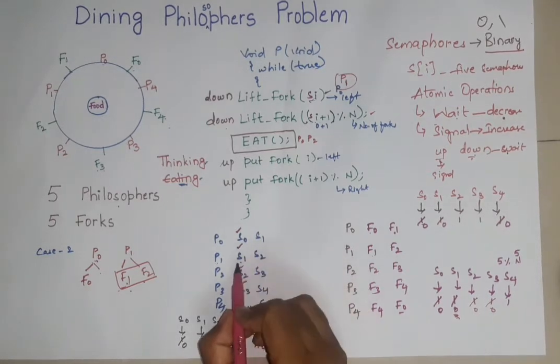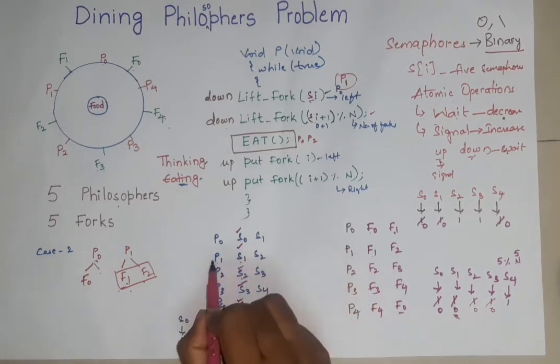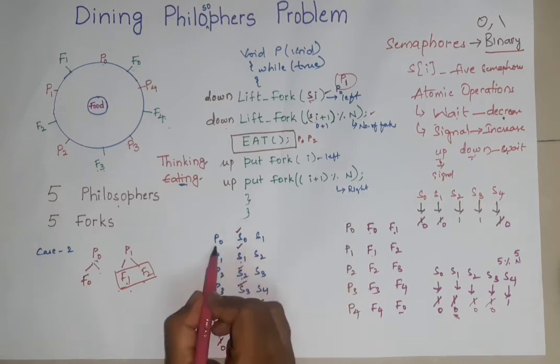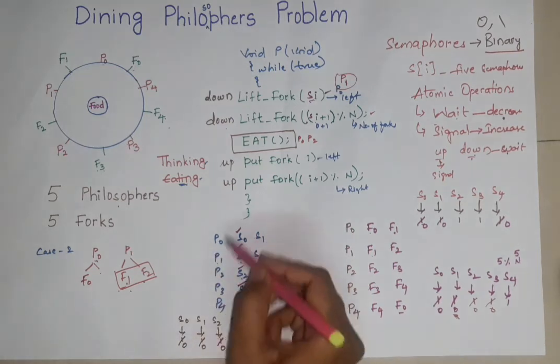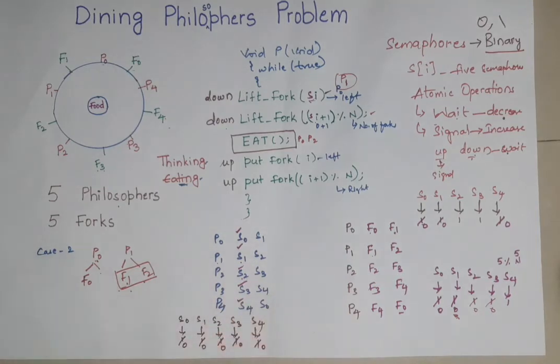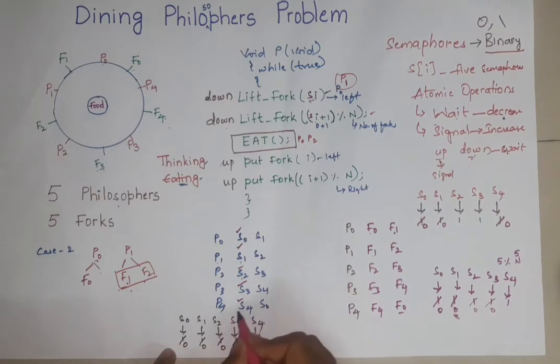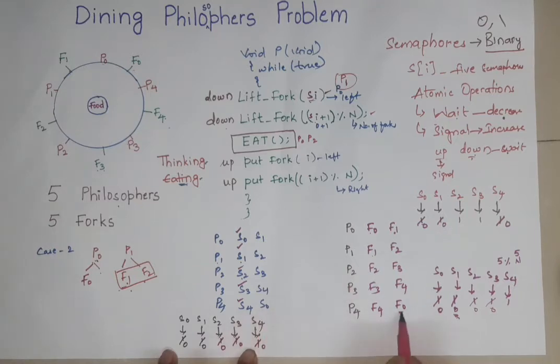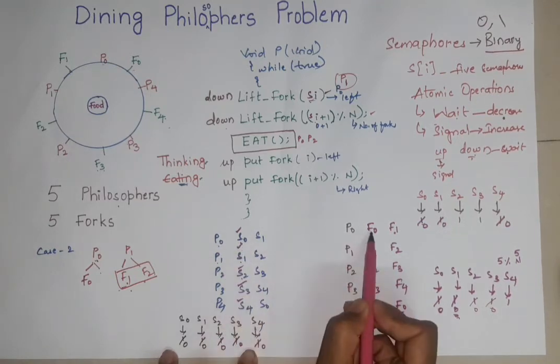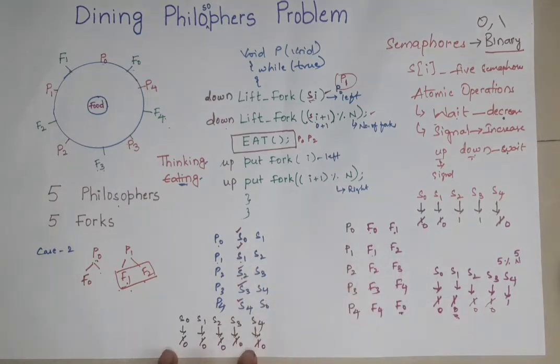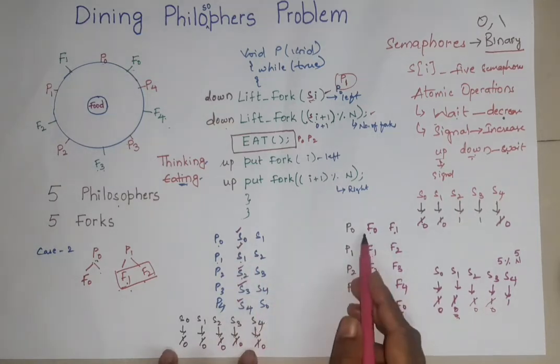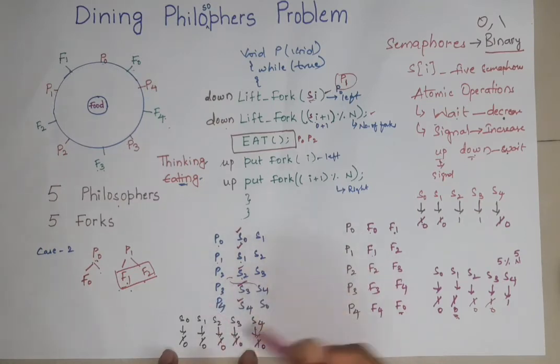So here what happens, as already S1 is there, F1 is there with P1, P0 cannot take S1. So this creates a deadlock. So when will these people will leave this one? If P4 gets these two values, these two forks and after eating, it will leave, it will put back the forks again. But it will never get the S0, it will never get the F0 because P0 has already taken S0. So it will never get that F0. So it is nothing but a deadlock.